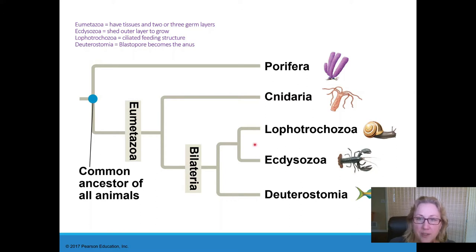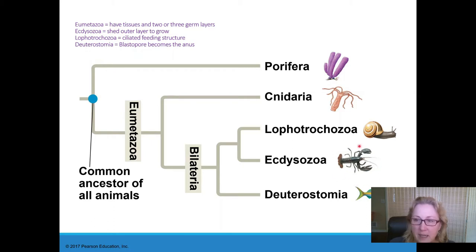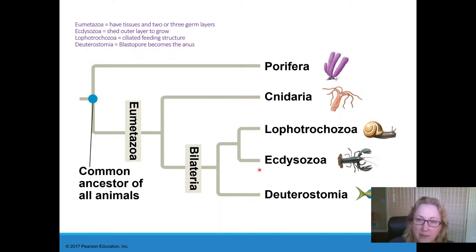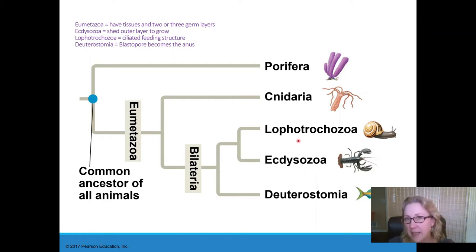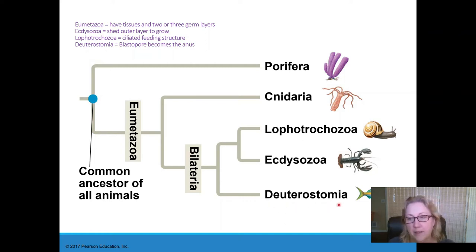The Lophotrochozoa and the Ecdysozoa were determined using DNA, because there's a lot of overlap in traits between organisms in these two groups. Having a chitinous exoskeleton, or a ciliated feeding structure — some in both groups have those. So DNA really helps sort these groups out and make sense of them. And then lastly, we'll talk about the deuterostomes, which includes our phylum, the chordates. The next chapter is all about the chordates.